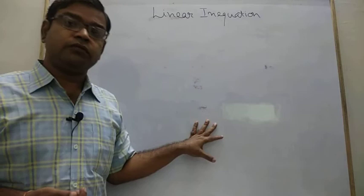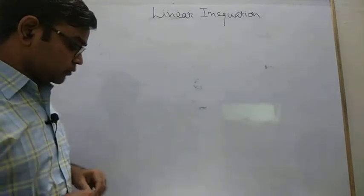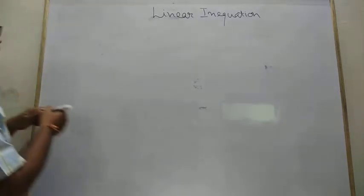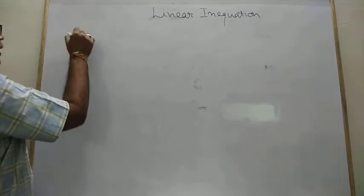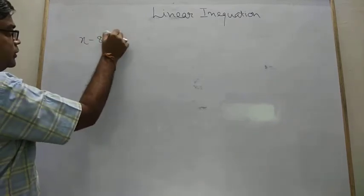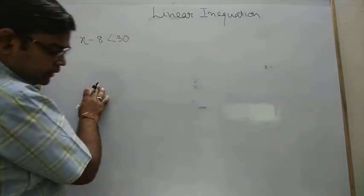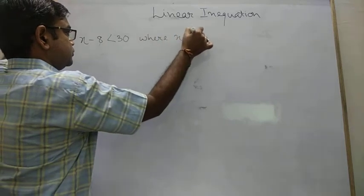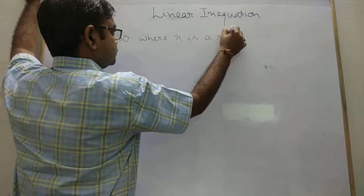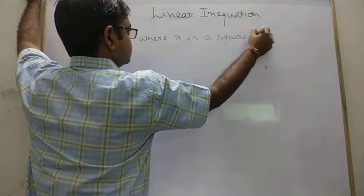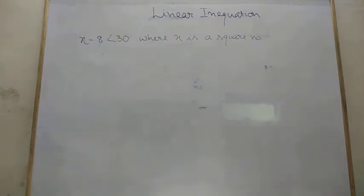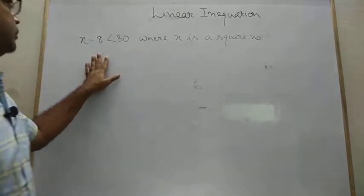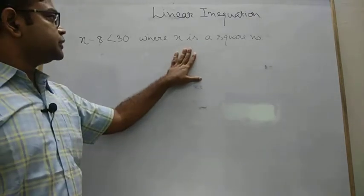That's much. This is your work. So in this case question said that to find the solution set for the given inequation. And in this case, it says that x minus 8 is less than 30. Clear? And where x is a square number. So this little bit fade because I forgot to fill the ink in the black part. This where x is a square number.